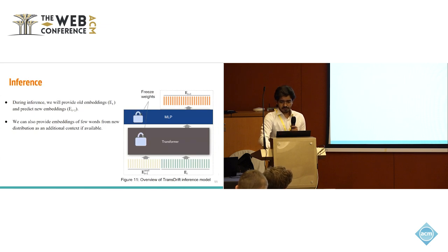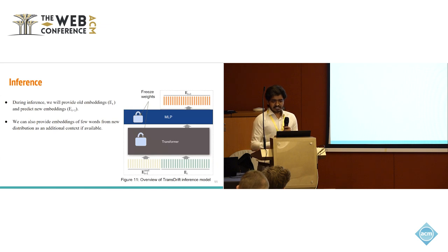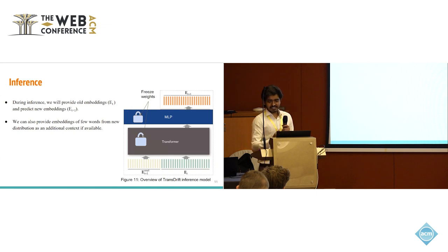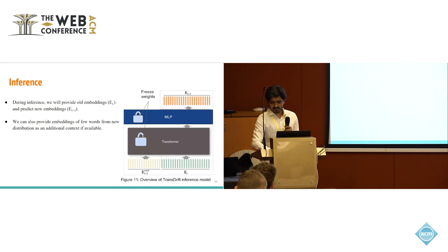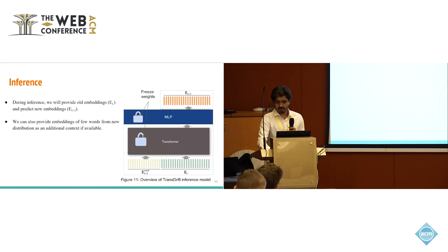At inference time, we freeze the weights of our transformer and MLP layers. We just need to pass the embedding trained on the old data distribution, that is ET. Our model will predict embeddings which are closer to those trained on the new data distribution, that is ET+1. If we have some data from the new distribution, similar to the training process, we will train ET+1 small on that data and pass it as additional context.